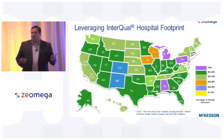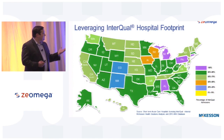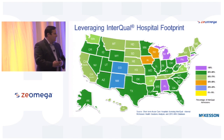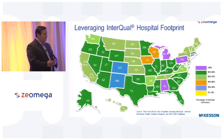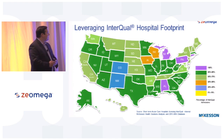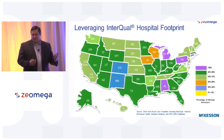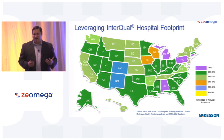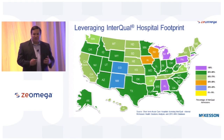Here's the InterQual hospital footprint. As you can see, some places are at 100% — like Alabama, 87% in Louisiana, a big percentage in Texas. This gives you a good feel for where we are throughout the country. 3,700 hospitals are using the product, and that's bigger than any other competitor.